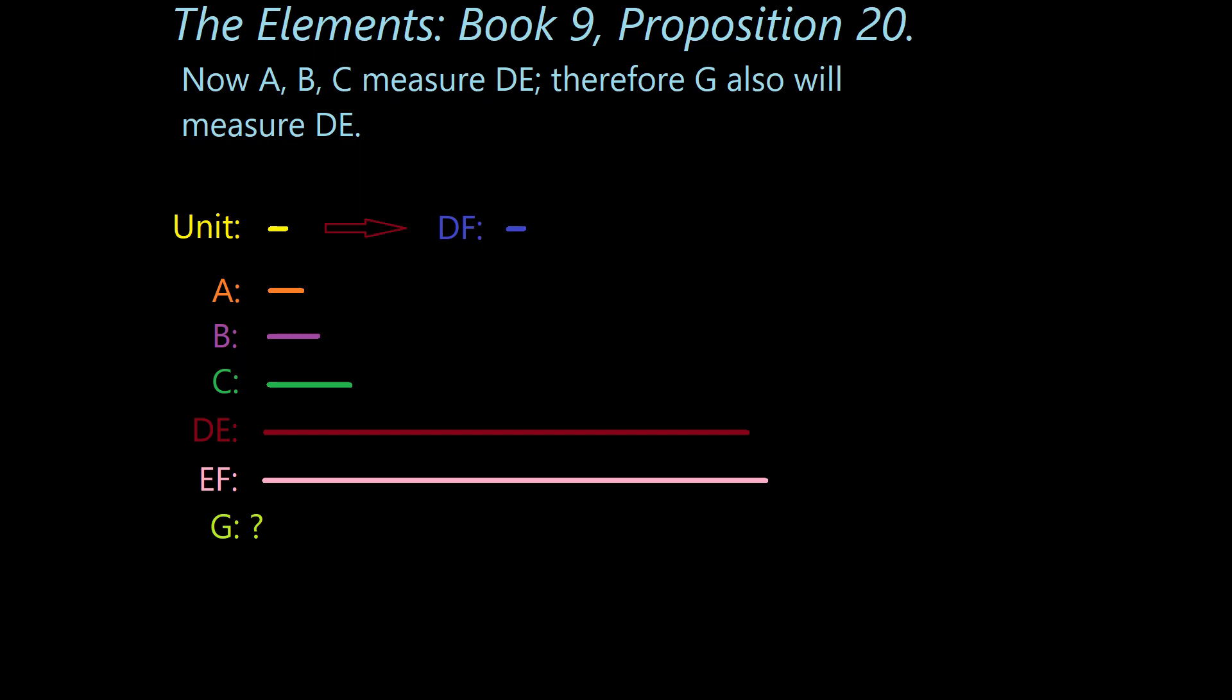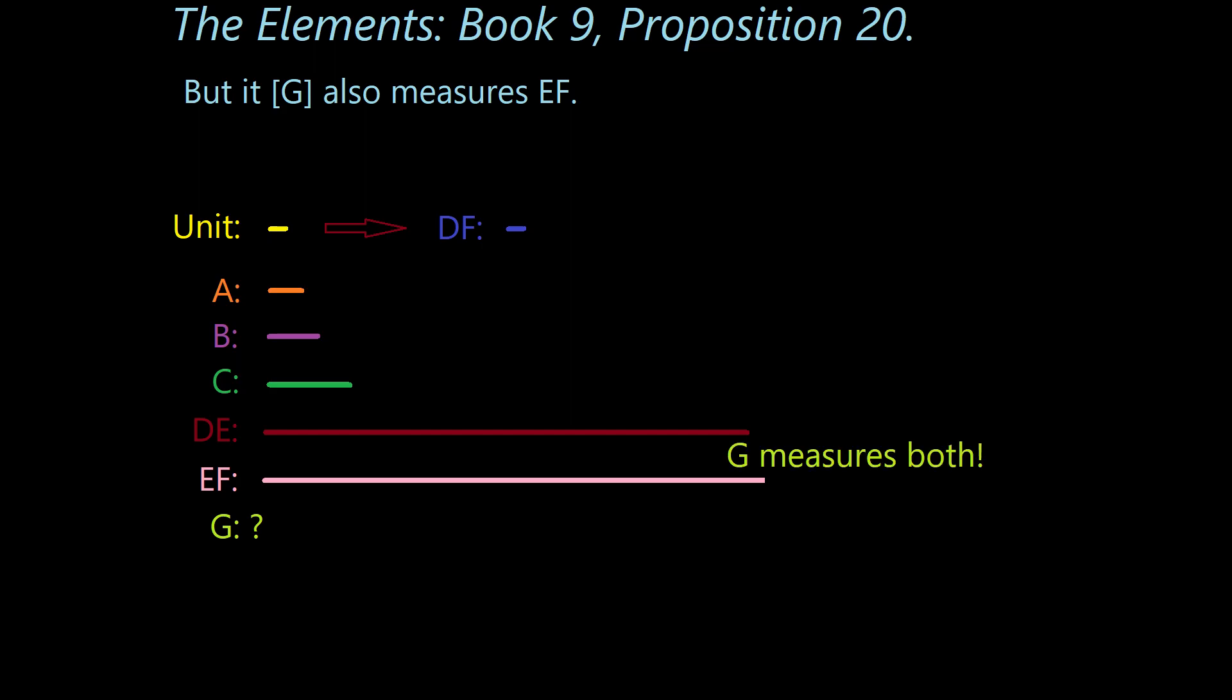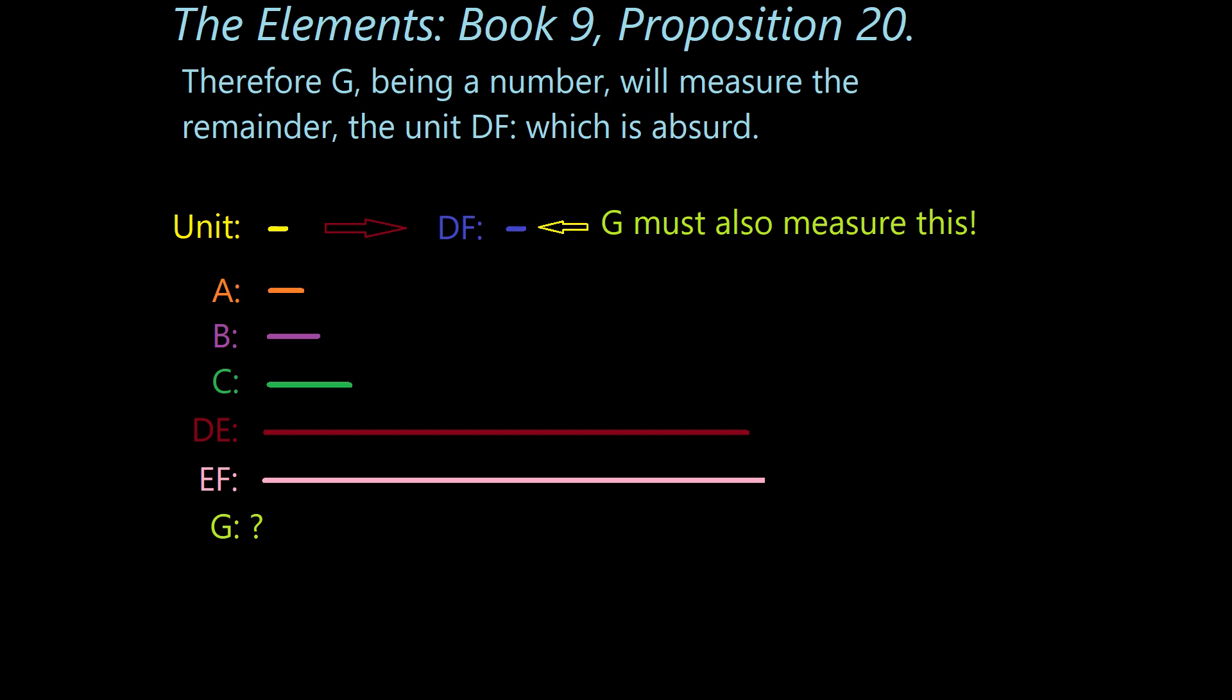So on to the next step. But it also measures EF. And by it, we're still referring to G. And the point Euclid is making is that if G is the same as A, B, or C, then G measures both the line DE and the line EF. Therefore, G, being a number, will measure the remainder, the unit DF, which is absurd.